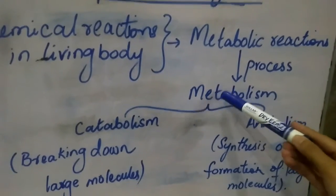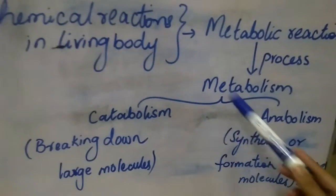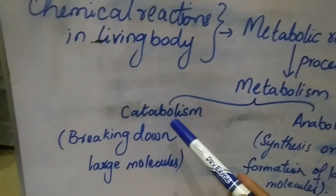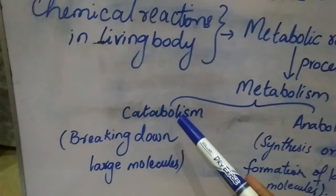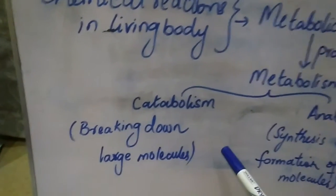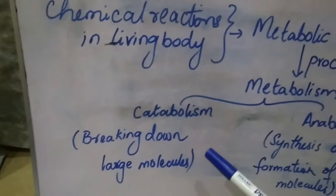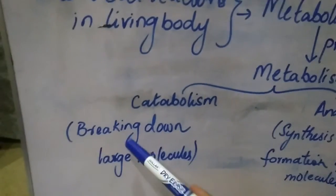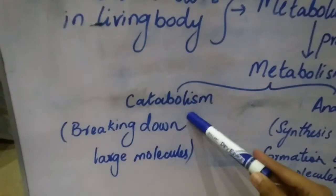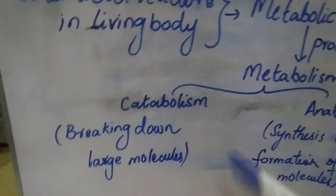Now we have two types of metabolism: catabolism and anabolism. Catabolism is similar to the decomposition reaction we studied in chemistry, in which the breaking down of large molecules takes place. So in biology, when chemical reactions are going on inside the body and the breaking down of large molecules is taking place, we term that process as catabolism.